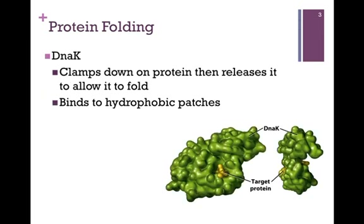Another type of molecular chaperone is DnaK. It is not associated with the ribosome. This molecular chaperone clamps down on the protein and then releases it, thereby allowing it to refold itself. Again, it binds to hydrophobic patches of the protein that would normally be folded within the internal regions.